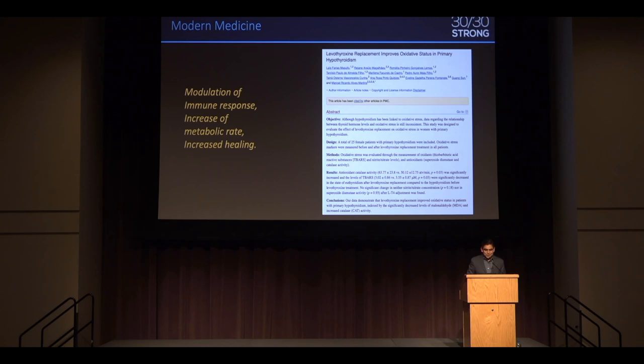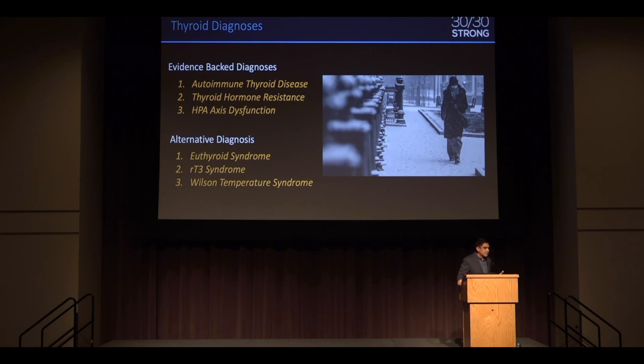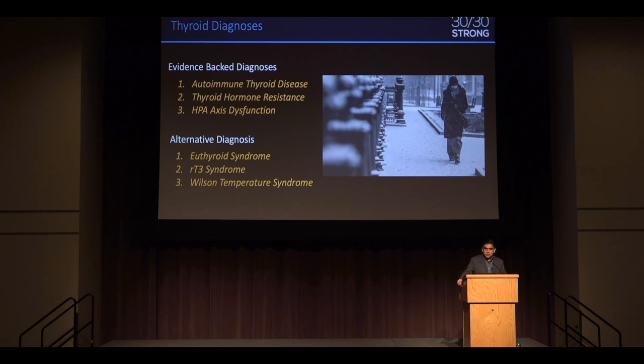That said, should everyone just get on thyroid hormone? The problem is that any time we believe we've discovered something — like this is going to fix everything — we mess up. If we don't look at evolutionary perspectives and what's actually happening in the body, we can get into a lot of trouble. There are evidence-based diagnoses like autoimmune thyroid disease, thyroid hormone resistance — which happens when you take too much thyroid medication and receptors stop accepting the hormone, or genetically when you lack the correct phenotype to create those receptors — and HPA axis dysfunction.